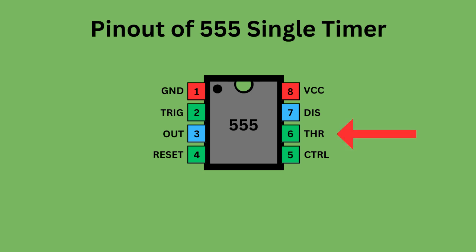Pin 6, the threshold pin, monitors the voltage of the capacitor in the circuit. Pin 7, the discharge pin, manages the timing capacitor's charge and discharge cycle. Pin 8, known as VCC, supplies power to the IC.